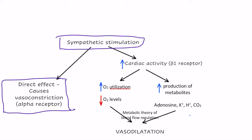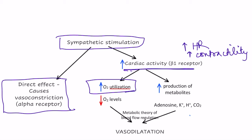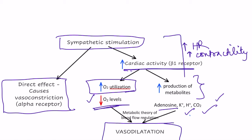Sympathetic stimulation also increases cardiac activity via epinephrine acting on beta receptors, causing increased heart rate and contractility. This increases oxygen utilization and decreases local oxygen levels. Additionally, increased heart activity raises production of metabolites — carbon dioxide, hydrogen ions, adenosine, and potassium ions. The fall in oxygen and rise in metabolites causes vasodilation. This indirect effect is more potent, so sympathetic stimulation physiologically results in vasodilation.